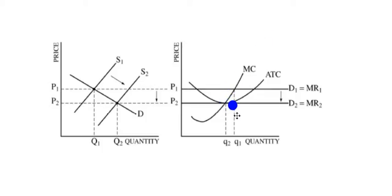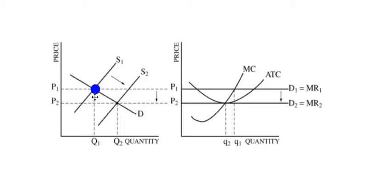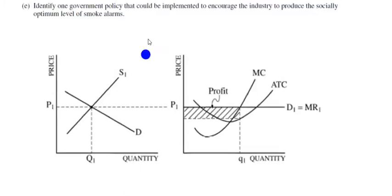The marginal cost curve for the firm did not change — we just moved along it. What changed for the firm was that price went down. Since price fell, the firm produces less quantity where price equals marginal cost. Profit goes from positive economic profit to zero. In the market, the rightward shift of the market supply curve is what drives the price down.